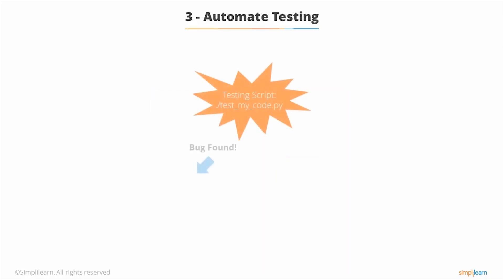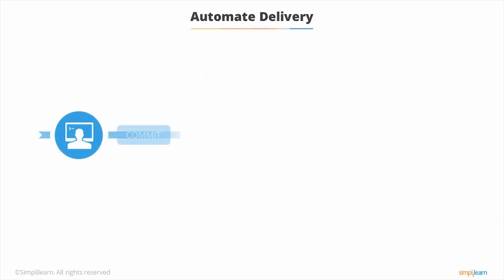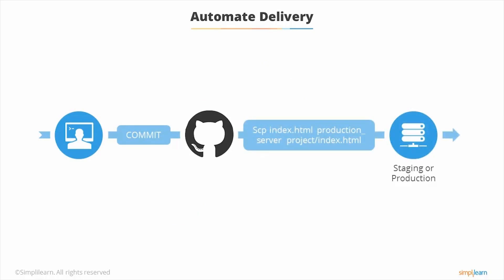Next up is automate testing. The idea behind automated testing is that when a new commit is performed, a test code script gets triggered and checks the code for bugs, allowing any bug to be caught early in the development cycle. Finally, our last principle of CI is automate delivery — after the project has successfully passed the code test during the testing phase, it is automatically moved to a staging or production server.